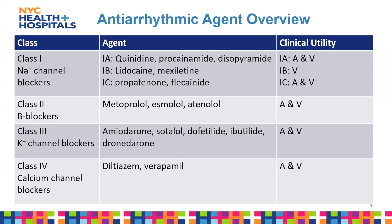These Class 1a agents can be used for both atrial and ventricular arrhythmias. Your 1b classifications are lidocaine and mexiletine, which cause mild blockade of sodium channels. These are known to shorten the QTc interval and are relatively safe, mainly used for ventricular tachycardias and arrhythmias.